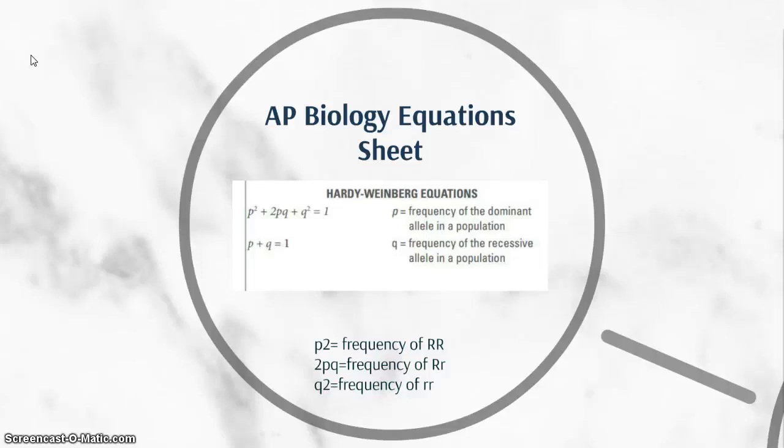On your formula sheet, you will be given the equation, then you will be told that p tells you the frequency of the dominant allele in a population and q is the frequency of the recessive allele in a population. You will be told that, but you will also need to know that p squared gives